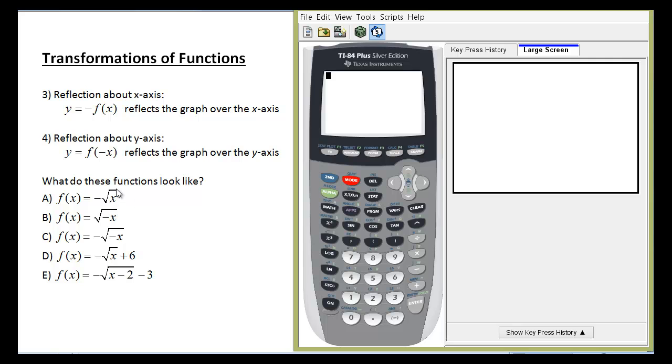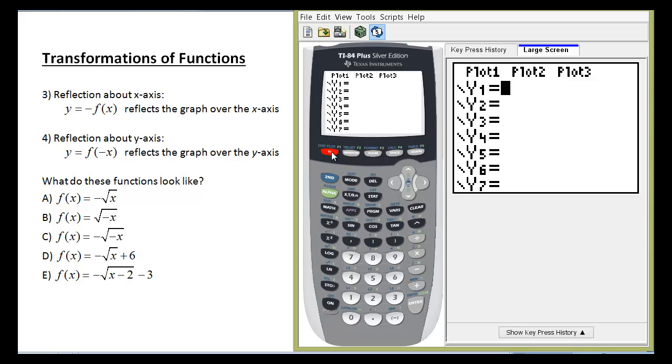Using the square root function is a really good function to see reflections appear. So let's start off on our calculator with the square root function. To get to that, you have to use the square root down here which is right above x squared. So I'm going to hit second, square root, put in my x.